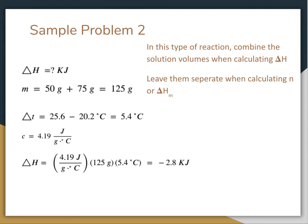So we can just do the same thing here. 4.19 J/g°C. We want joules on top because we're looking for kilojoules in the end. Multiply it by 125 grams and multiply it by 5.4°C. And that will net us -2.8 kilojoules.